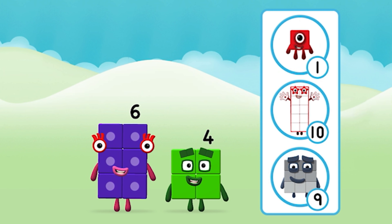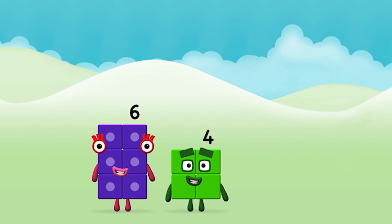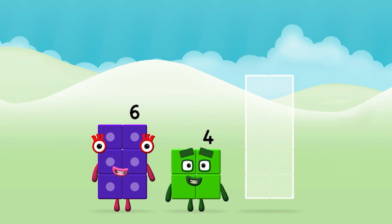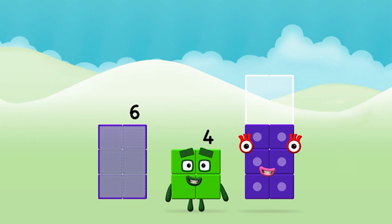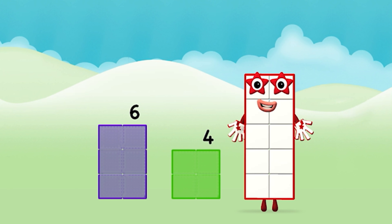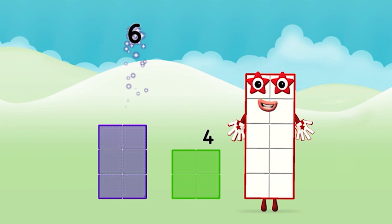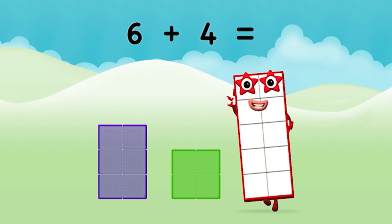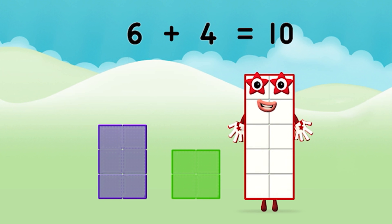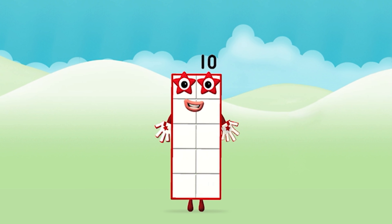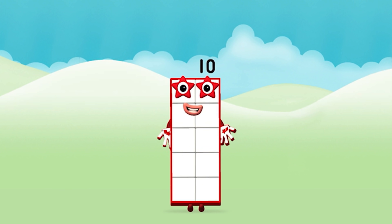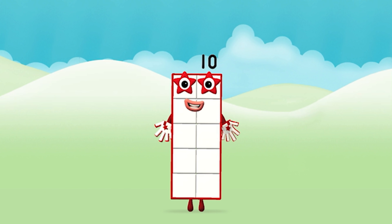What number block can you make by adding these two together? That's the correct answer. Now add the number blocks together: 6 plus 4 equals 10. Brilliant! You made number block 10!